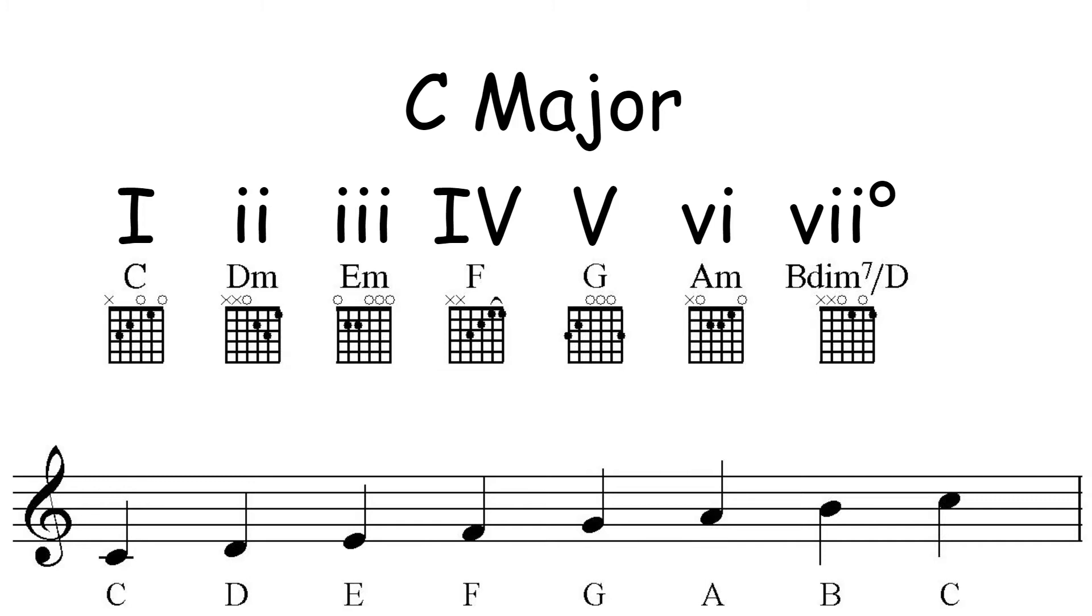As you can see, I've written out the Roman numeral equivalents for the chords—your numbers one through seven. But I wrote some of them a little differently. The one, four, and five are written in capital letters, but two, three, six, and seven are all written in lowercase, and the seven has that little circle next to it.